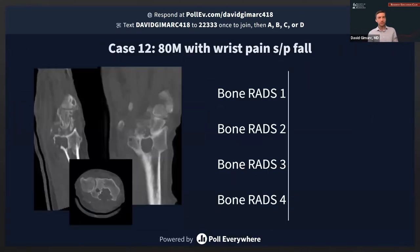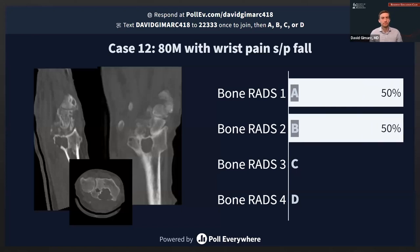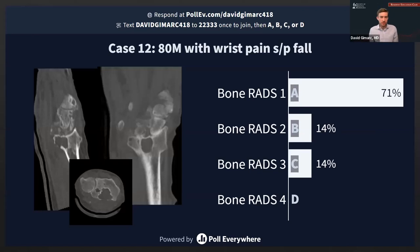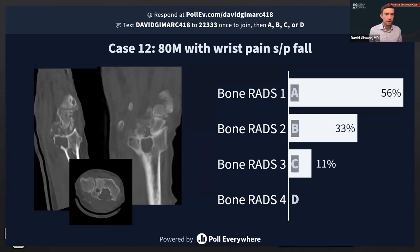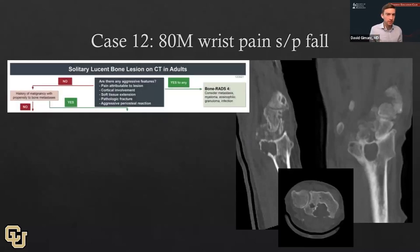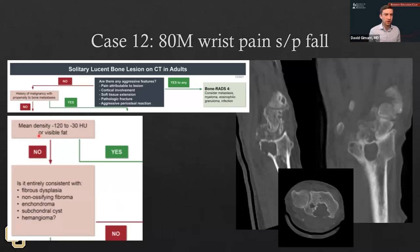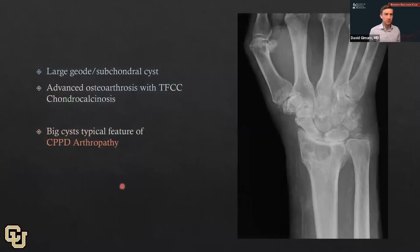Another case: an 80-year-old male with wrist pain after a fall. Some think it looks pretty good, some would like more imaging, a radiograph would be good here, and some would follow this up as Bone RADS 3. This is a solitary lucent lesion in an adult. It doesn't really have any aggressive features — a little thinning but that's really a much more isolated finding if you scroll through. It doesn't have intralesional fat, but it is consistent with a subchondral cyst. Here's the radiograph: a big geode or subchondral cyst in a wrist that clearly has advanced osteoarthritis with a lot of TFCC and chondrocalcinosis. When we see these cysts in the setting of chondrocalcinosis, this is a really good sign for CPPD arthropathy.